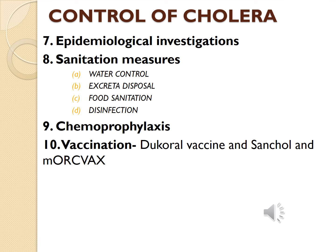Chemoprophylaxis is generally recommended only for household contacts or a closed community where a cholera outbreak has occurred; tetracycline is generally the drug of choice, and doxycycline can also be used. Regarding vaccination, two types of oral vaccines are available: the Dukoral vaccine and the Shanchol/mORCVAX vaccine. Dukoral is not licensed for children less than two years of age; two oral doses should be given more than seven days apart, and it is a monovalent vaccine containing only Vibrio cholerae O1. The Shanchol vaccine is a bivalent oral vaccine containing O1 and O139.